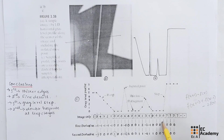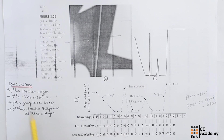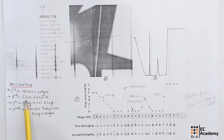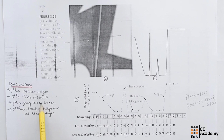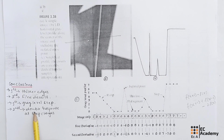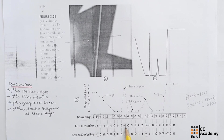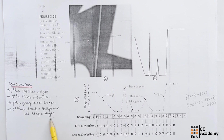For a gray level step, the response of first- and second-order derivatives is similar. In conclusion: the first-order derivative generally produces thicker edges; the second-order derivative has a strong response to fine details such as thin lines and isolated points; the first-order derivative generally has a stronger response to gray level steps; and the second-order derivative produces a double response at a step change in gray level — for example, −6 versus −12 for the first- and second-order derivatives respectively, and −2 versus −4 at another step. These are the key conclusions, and we will continue this topic in the next lecture.